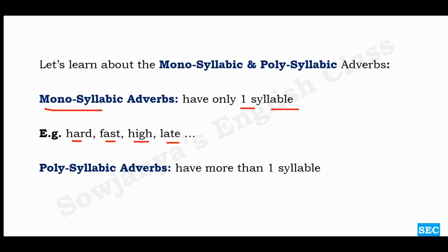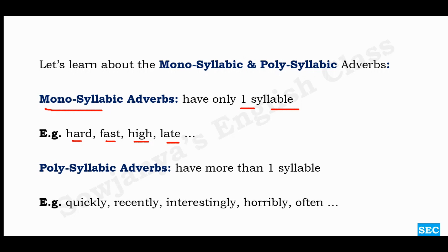Polysyllabic adverbs have more than one syllable. Examples: quickly, recently, interestingly, horribly, often. 'Quickly' has two syllables, 'recently' has three, 'interestingly' has five, 'horribly' has three, 'often' has two. These are polysyllabic words — 'poly' means many, more than one. If an adverb has more than one sound unit, we call it a polysyllabic adverb; if it has only one syllable, it is monosyllabic.